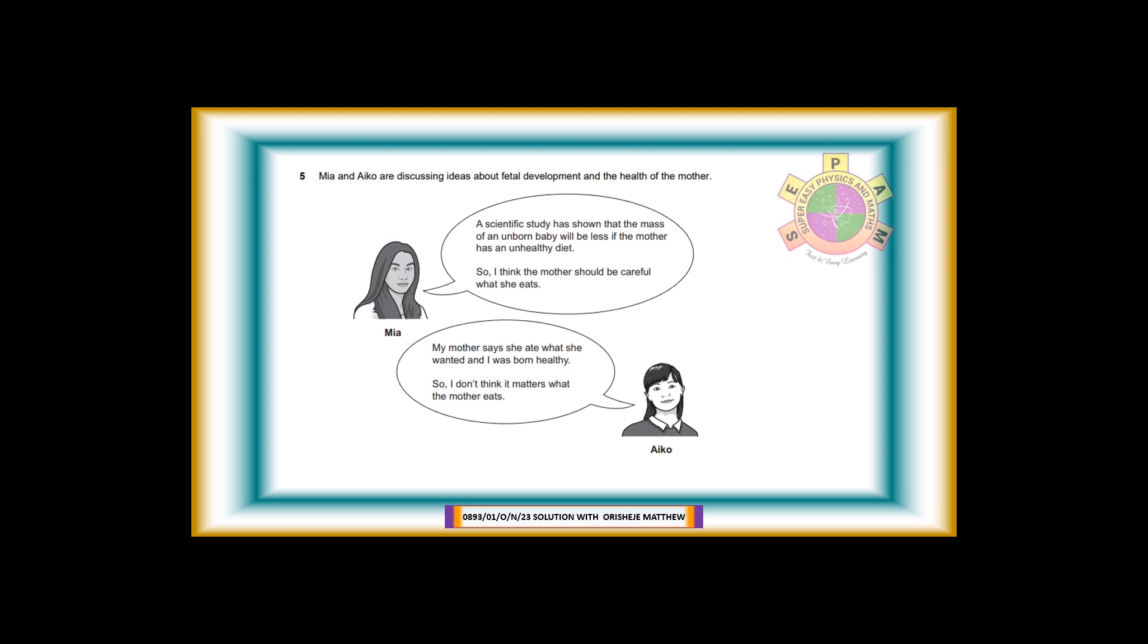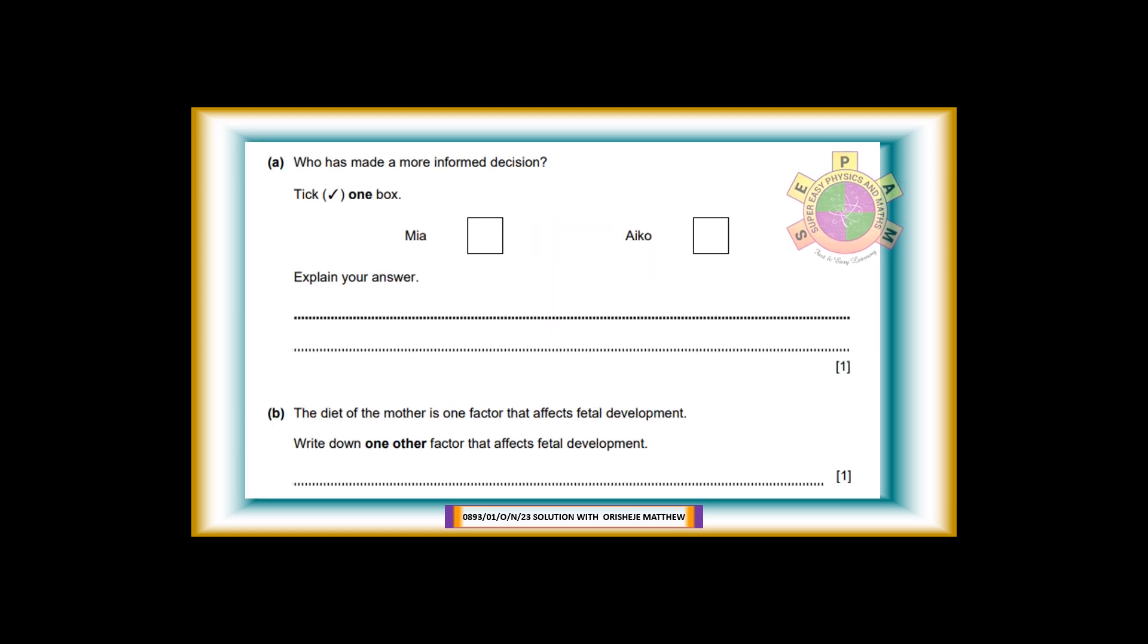Question 5. Mia and Ico are discussing ideas about fetal development and the health of the mother. Mia said: A scientific study has shown that the mass of an unborn baby will be less if the mother has an unhealthy diet, so I think the mother should be careful what she eats. Ico said: My mother says she ate what she wanted and I was born healthy, so I don't think it matters what the mother eats. 5a: Who has made a more informed decision? Is it Mia or Ico? Tick one box. For 1 mark. Answer: Mia made more informed decision. Mia's decision is based on scientific evidence or using evidence from a secondary source like research data, scientific or research study, and facts.